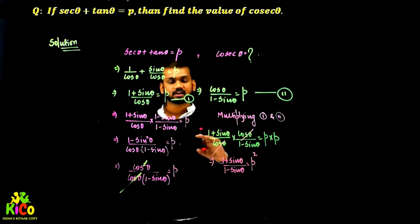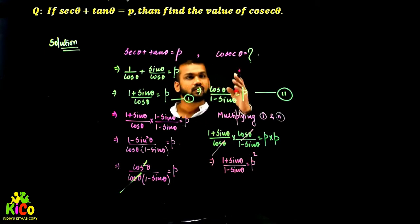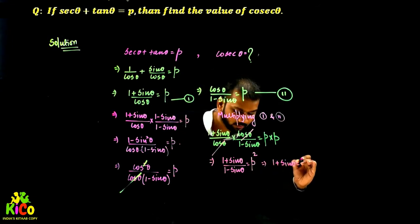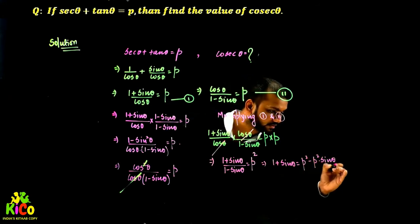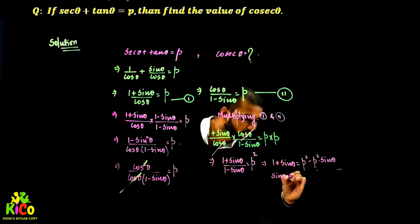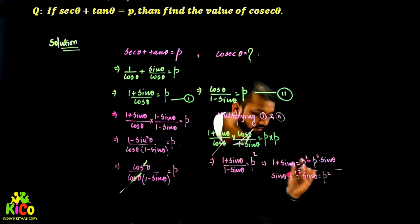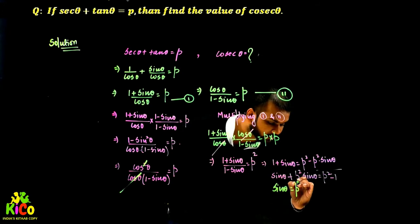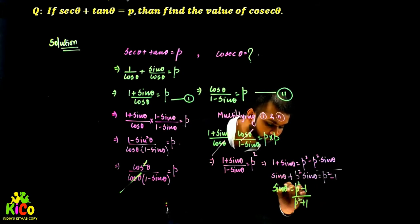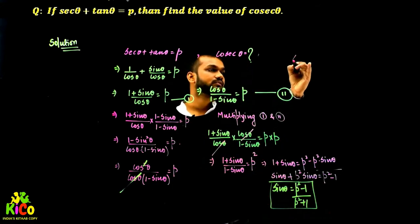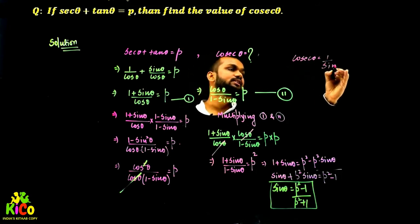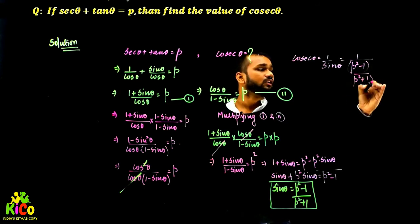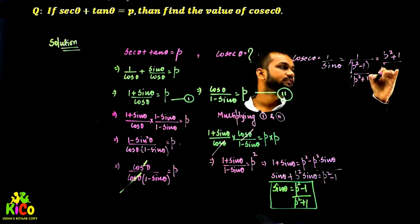Now let us solve for sin θ. Cross-multiplying: 1 plus sin θ equals P² minus P² sin θ. Bringing sin θ terms together: sin θ plus P² sin θ equals P² minus 1, so sin θ times (P² plus 1) equals P² minus 1, giving sin θ equals (P² minus 1) divided by (P² plus 1). Now cosec θ equals 1 upon sin θ, so cosec θ equals (P² plus 1) divided by (P² minus 1).